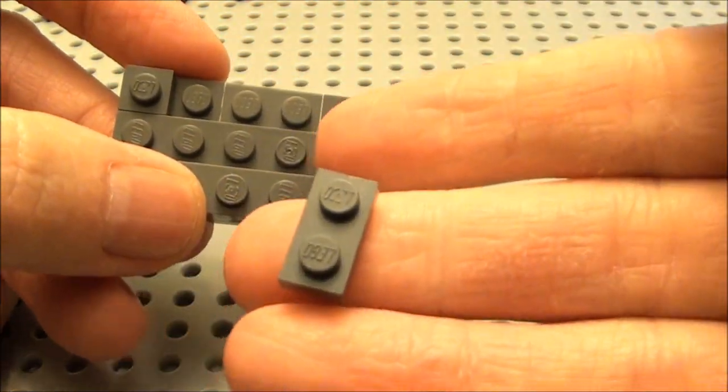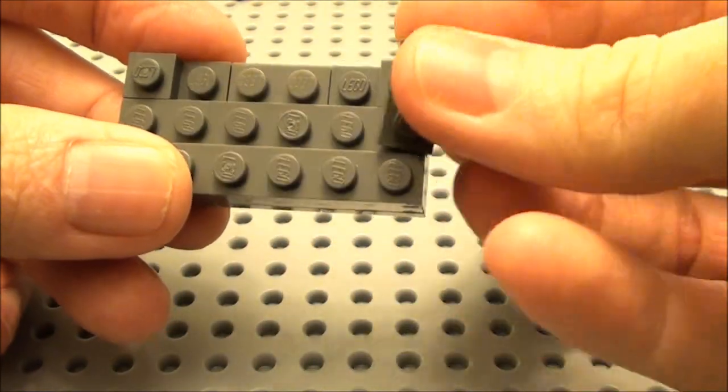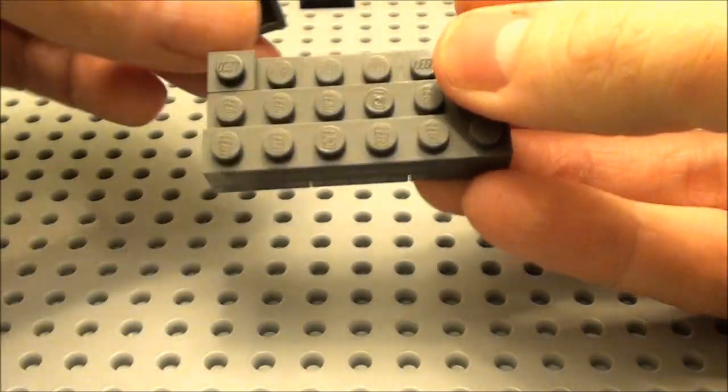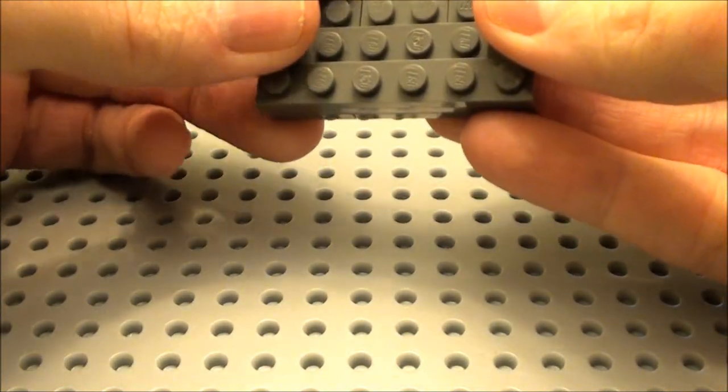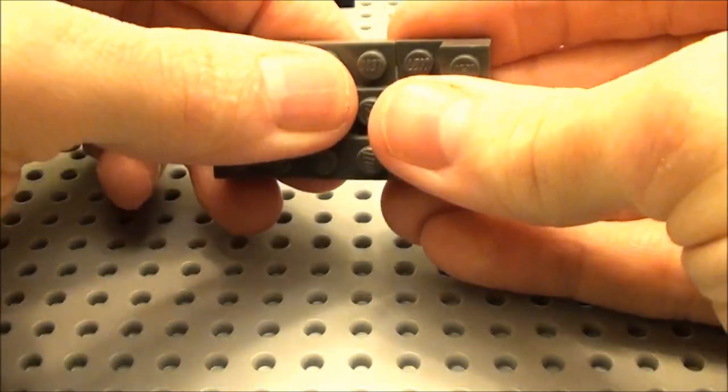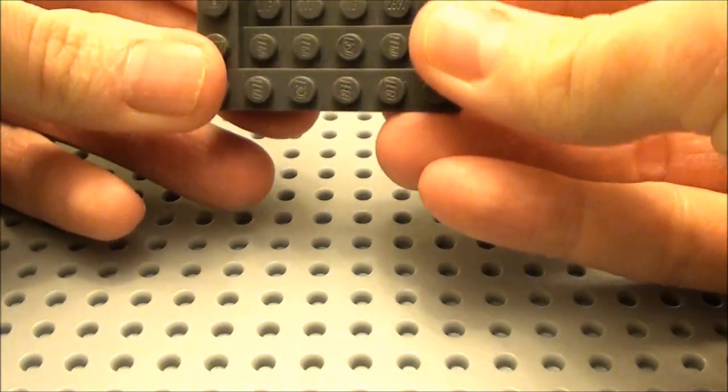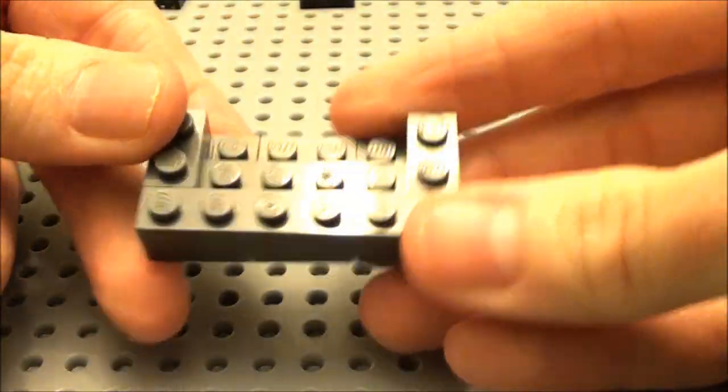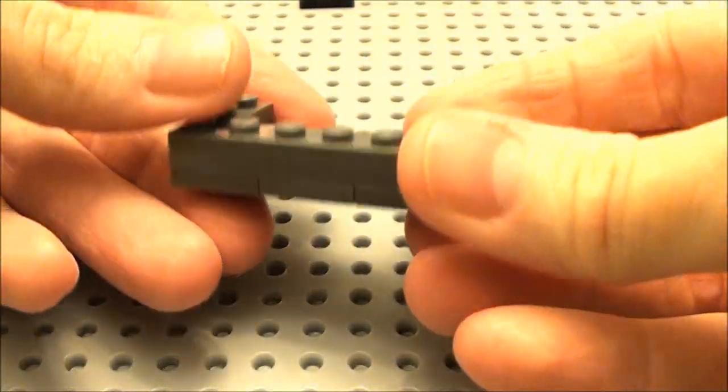Now simply take two of these 1 by 2 plates. We'll place them one on each side here. And there we have it. There's the body of our grill.